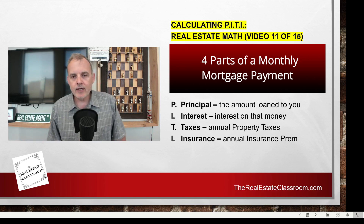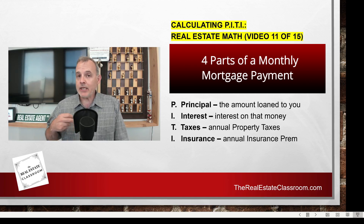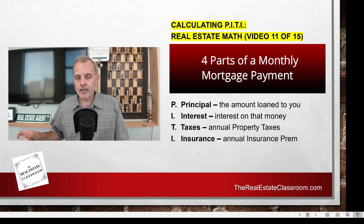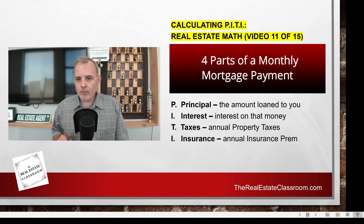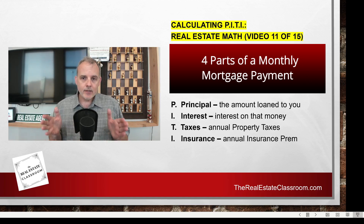On your screen, PITI stands for Principal, which is the amount that has been loaned to you by the lending institution. The interest is the interest that you're paying on that money that's been loaned to you. Then we have our annual property taxes and our annual insurance premiums. Those are the four parts of a typical monthly mortgage payment.